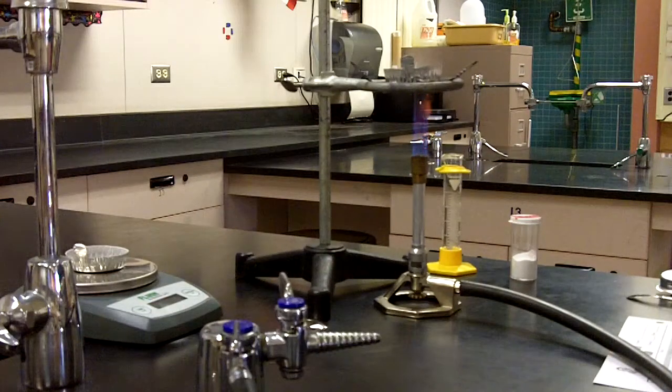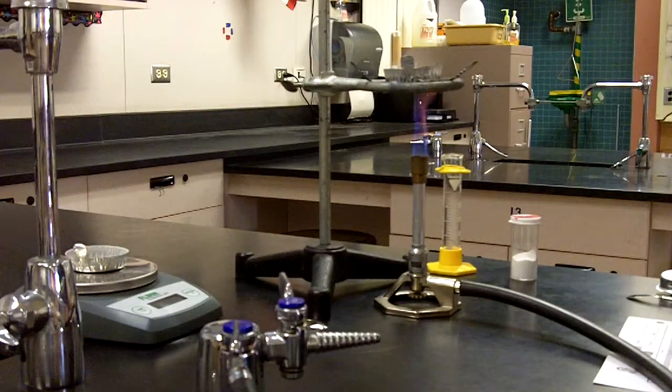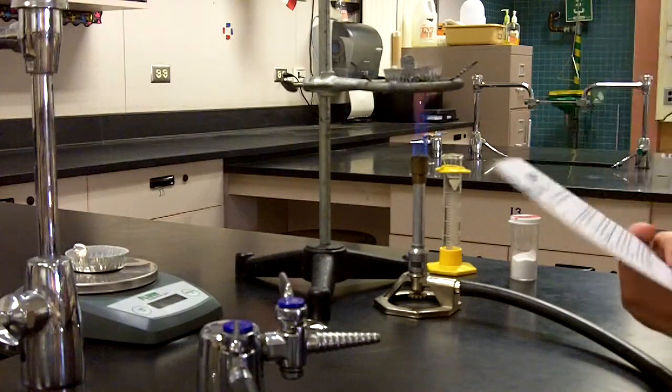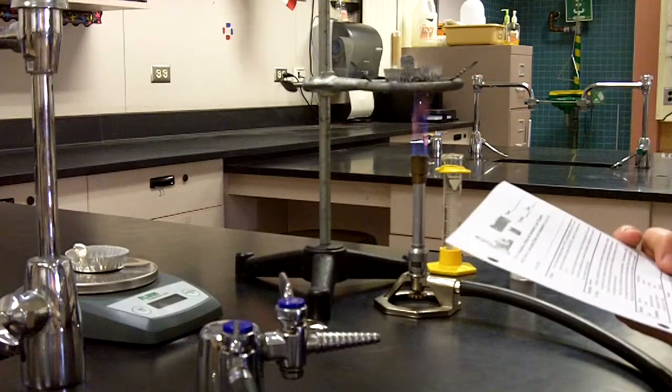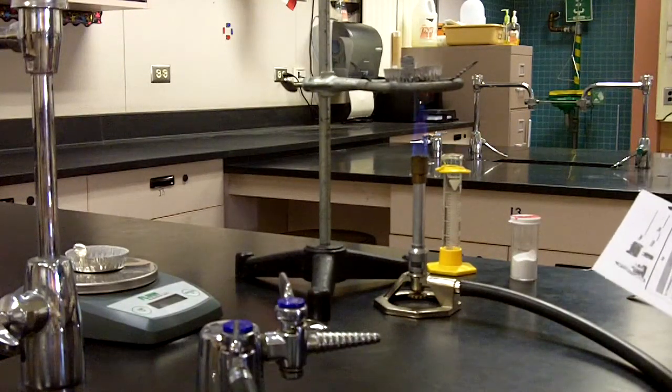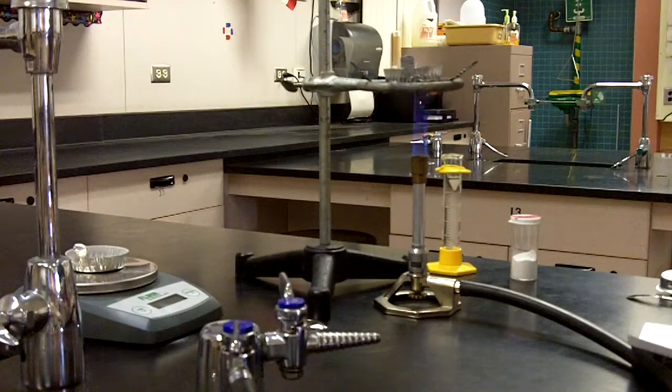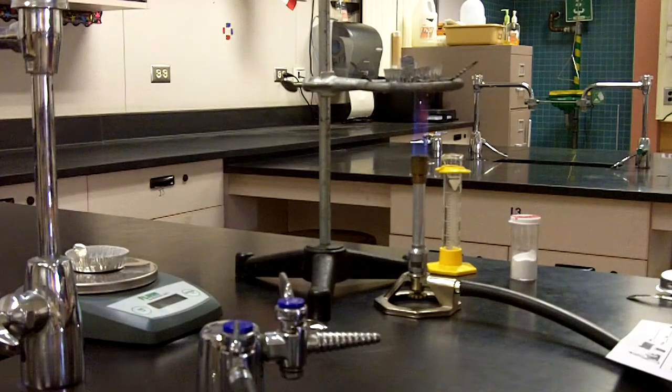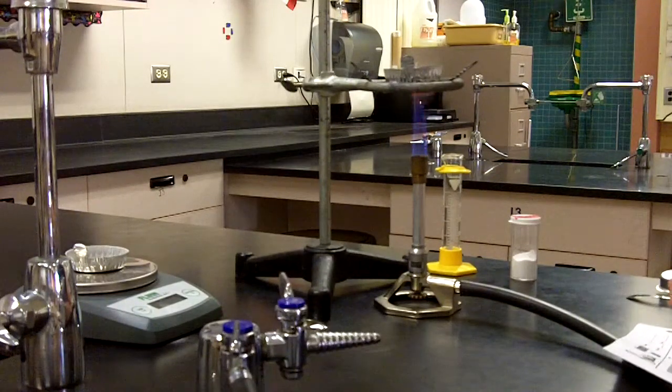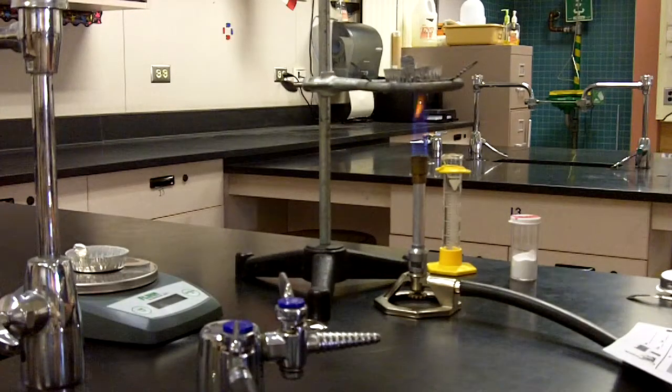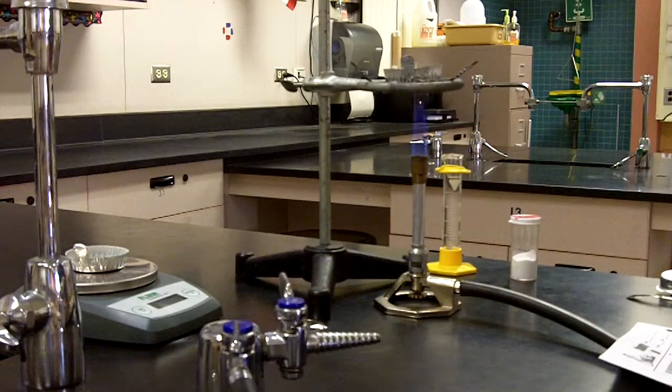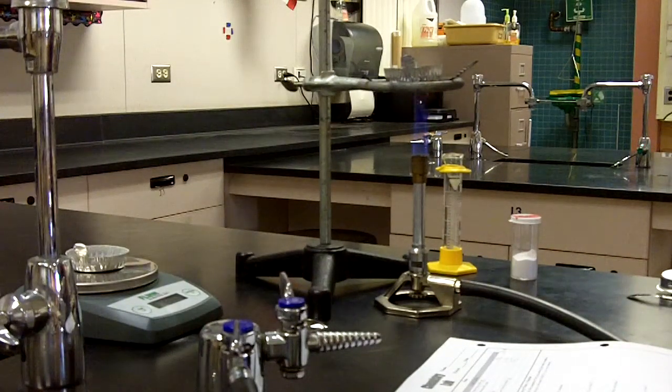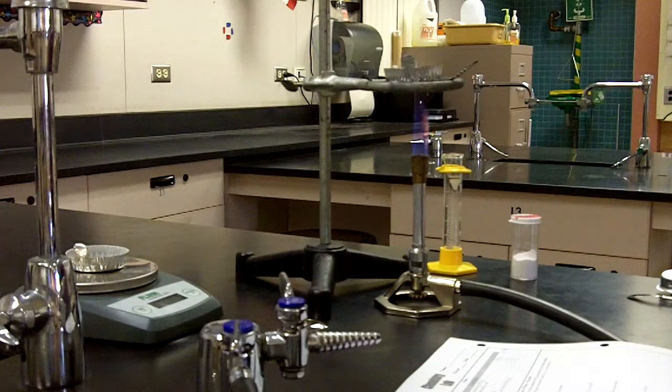So here we have our dry watch glass. This measures 2.0 with the solid product. This watch glass here, prior to putting in the baking soda, had a mass of 1.3. And that 1.3 is going to be the value of just the evaporating dish. So please write 1.3 to the right of where we have 1.4, put it in parentheses. This will make it obvious that you were watching the video.